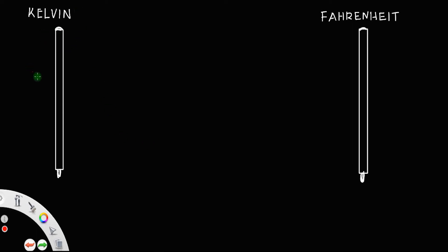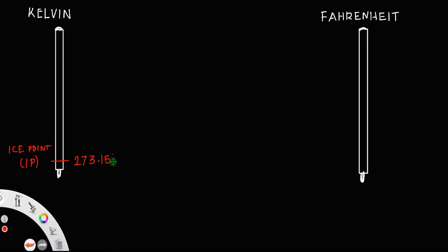What is the relationship between the reading on the Kelvin scale and the Fahrenheit scale? Let us take the ice point of the Kelvin scale — we represent that as IP. The ice point of Kelvin is actually 273.15 Kelvin.